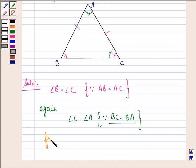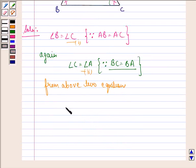So from above two equations, equation 1 and equation 2, we get angle A is equal to angle B is equal to angle C. We know that